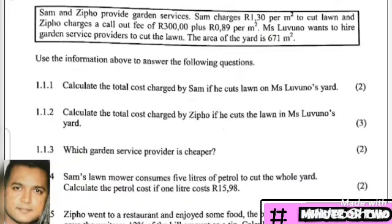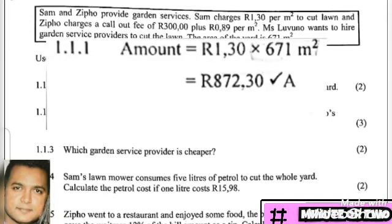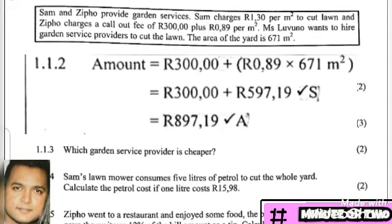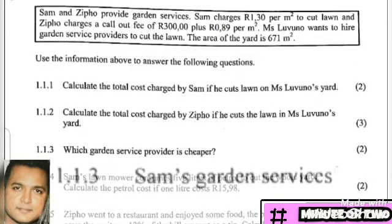Question 1.1.3: which garden service provider is cheaper? This is a follow-up from 1.1.1 and 1.1.2, where we worked out both charges. Sam's total was R872.30 and Zippo's was R897.19. Therefore, Sam's garden service is the cheaper option.